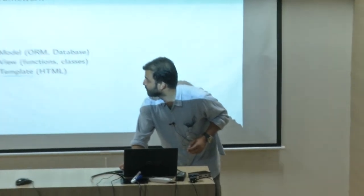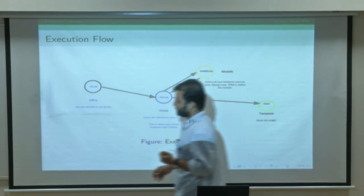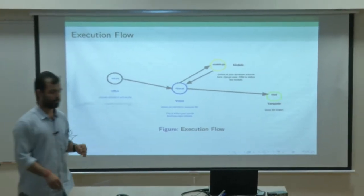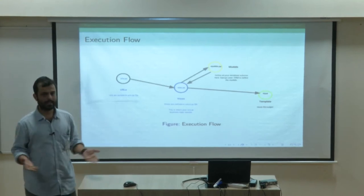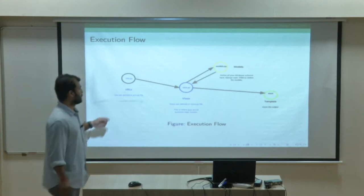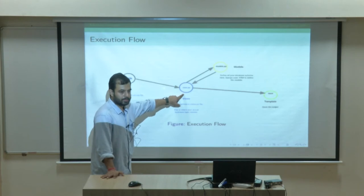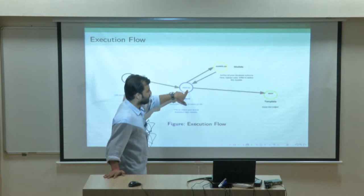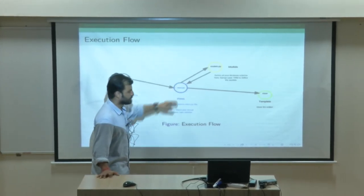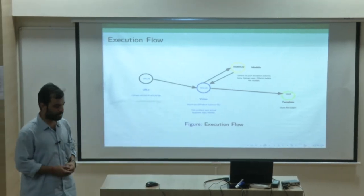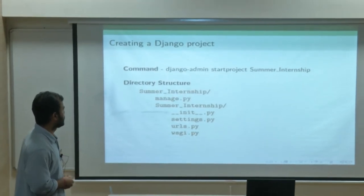You will write all your template processing in HTML files, all your controllers in view files, all your models in model files. So now we'll see in detail what the model is, and what the execution flow is. When you make a call to a URL, all URLs will be mapped to functions. This function can be a class-based function or a user-defined function. All your URLs will be defined in urls.py, which maps to your view functions where you write your actual business logic.